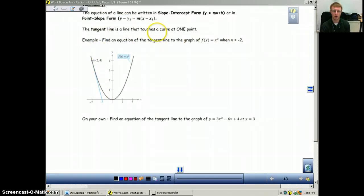So it says find an equation of the tangent line to the graph f of x equals x squared, when x equals negative 2. Well, the first thing is we know we have to find the slope. So to find the slope, we take the derivative, f prime of x equals 2x.